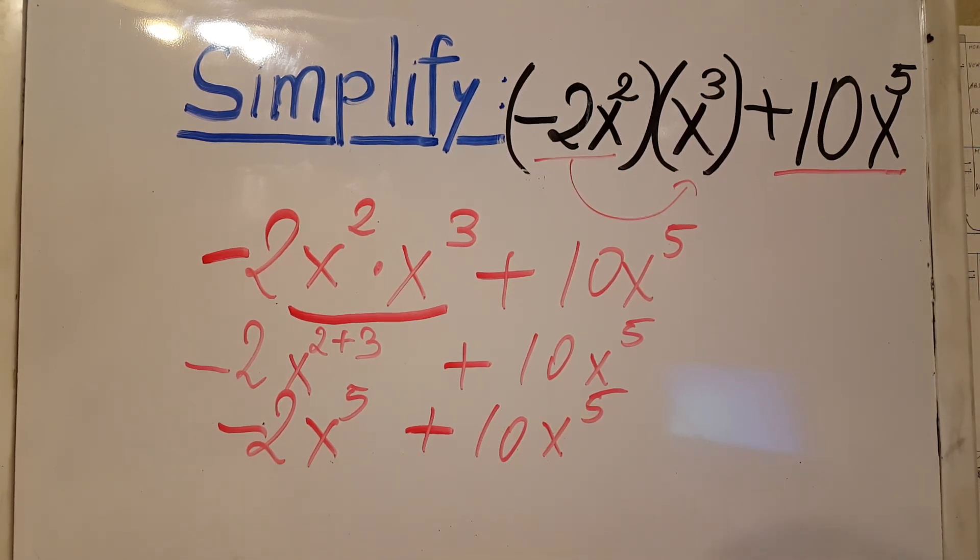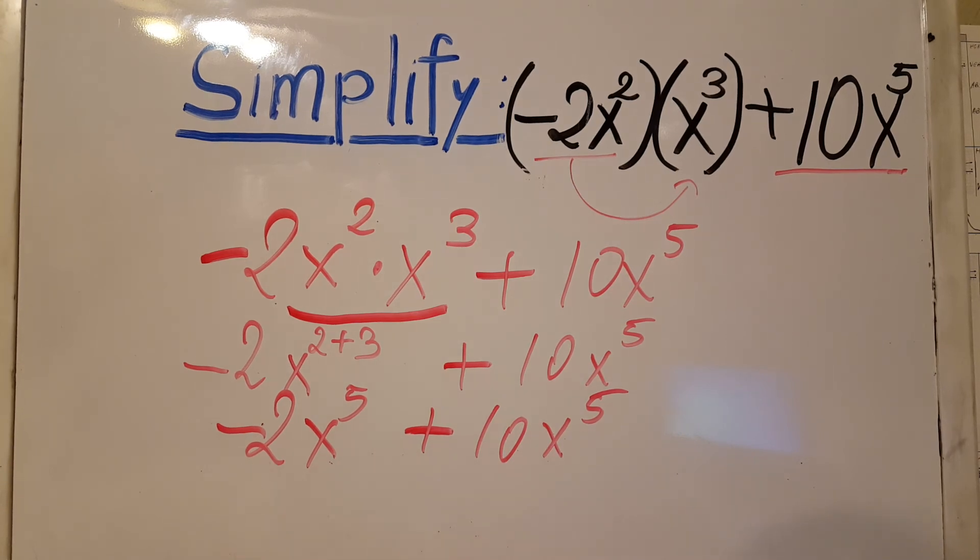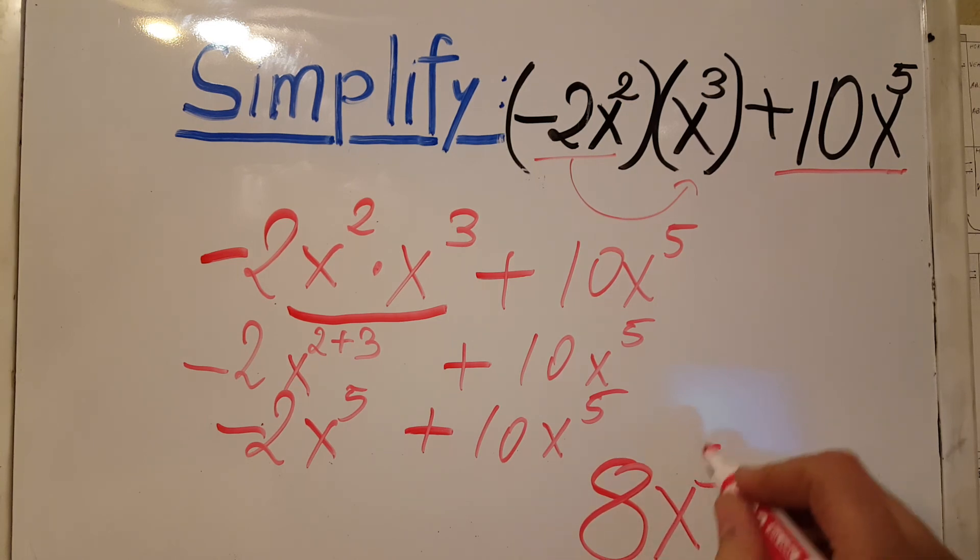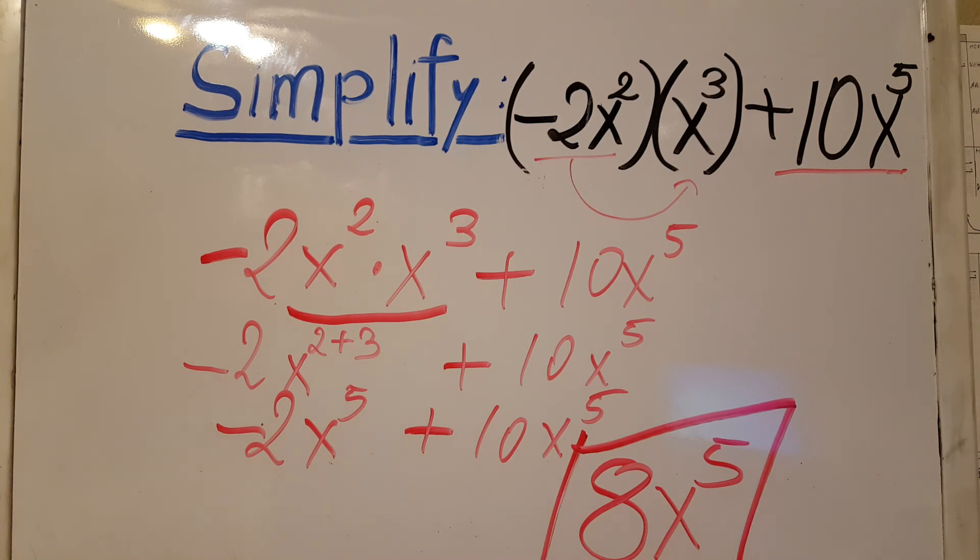Negative 2, 10, that's gonna give us an 8, and we're gonna have 8 times x to the fifth. And there you go, this is our solution.